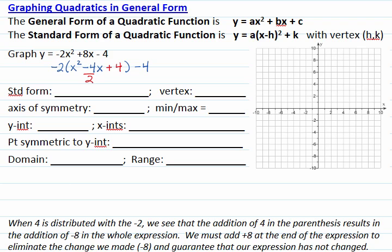To balance the addition of the extra term inside the parenthesis, we must distribute the negative 2 with the 4. That gives us negative 8, so by adding the 4 we added negative 8 to the expression. So to balance it out, we will add positive 8, and now the expression doesn't change.